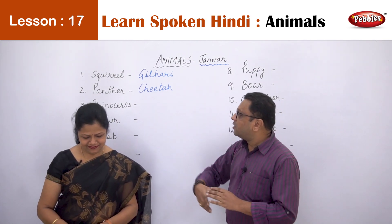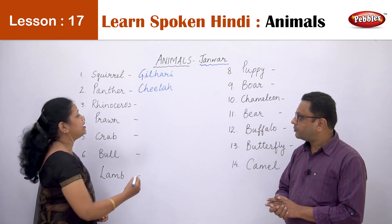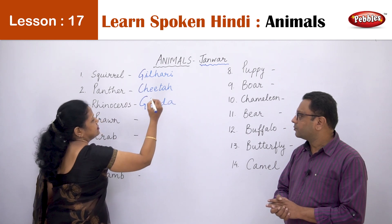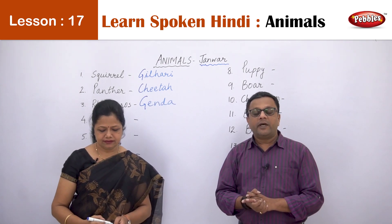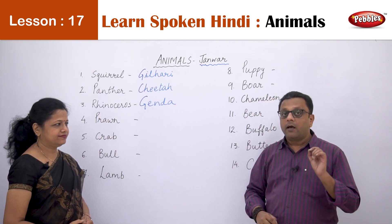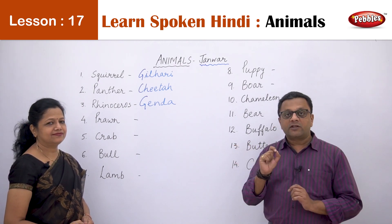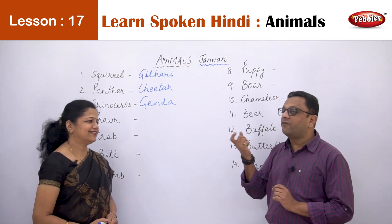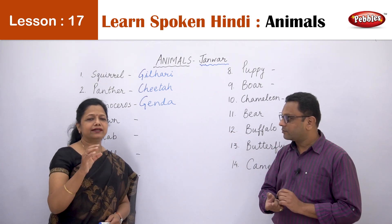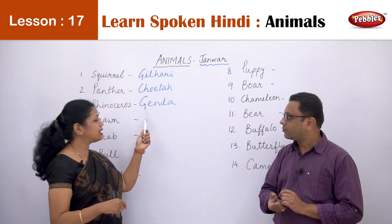The next is Rhinoceros. Rhinoceros in Hindi is called Genda. Now there is an interesting point — Genda is also the name of a flower, the marigold (Chrysanthemum), which is yellow or orange in colour and is also pronounced Genda.